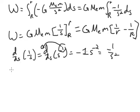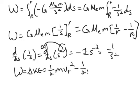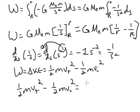Now we'll compare this work to the change in kinetic energy. Remember that work equals delta KE, and that's going to be one half m vf squared minus one half m vi squared. So we can compare these two, so we'll have one half m vf squared minus one half m vi squared is equal to G Me m times 1 over r minus 1 over big R.